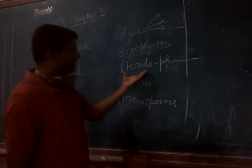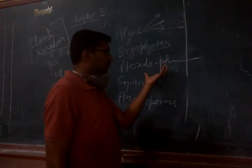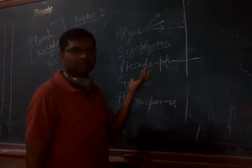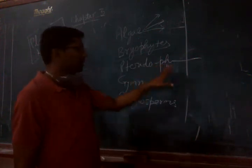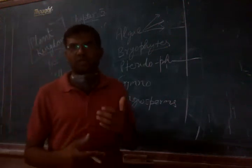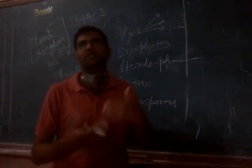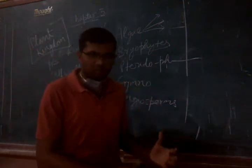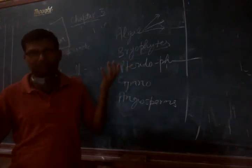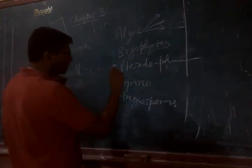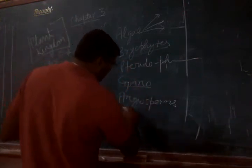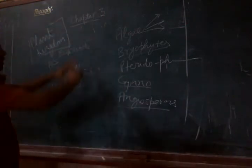Then we will see the pteridophytes. Pteridophytes are very primitive plants again, but they have a vascular system which enables the conduction of water and minerals absorbed from the soil. Then we will study the gymnosperms, and finally the angiosperms.